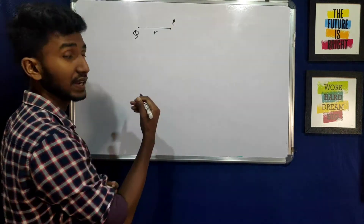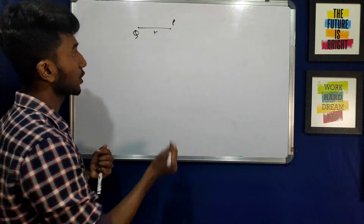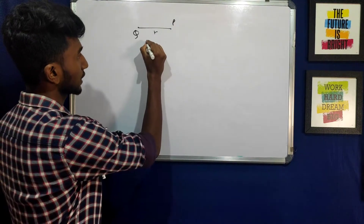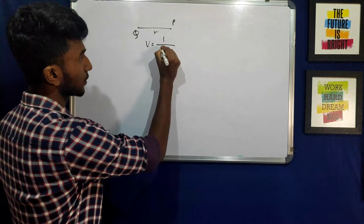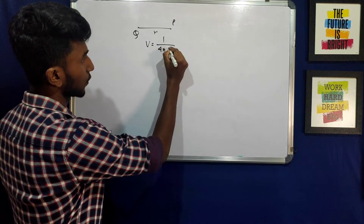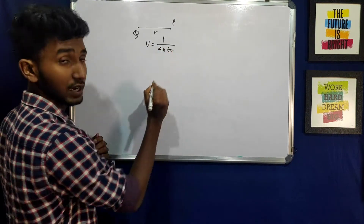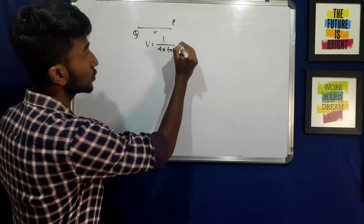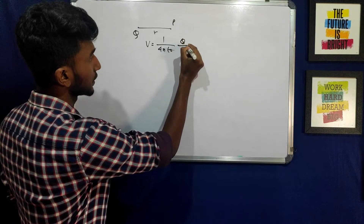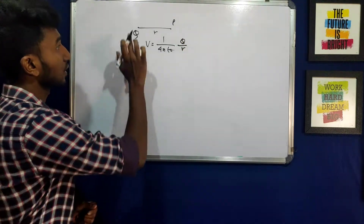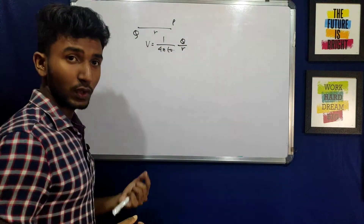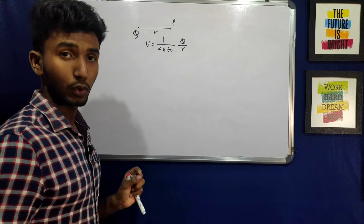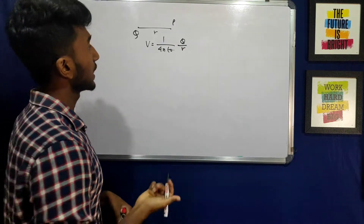V equals 1 by 4 pi epsilon naught into q by r. So this formula is for the electric potential due to a point charge.